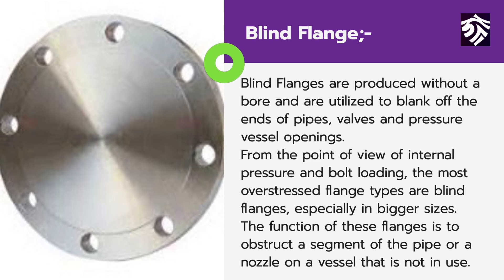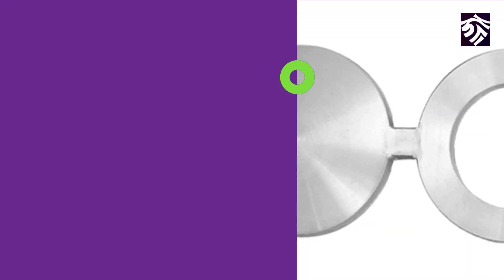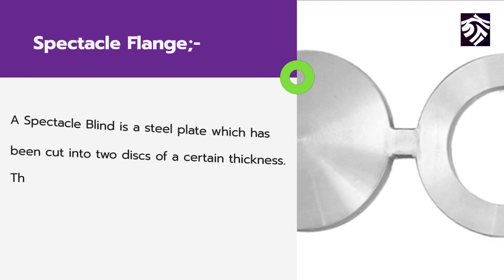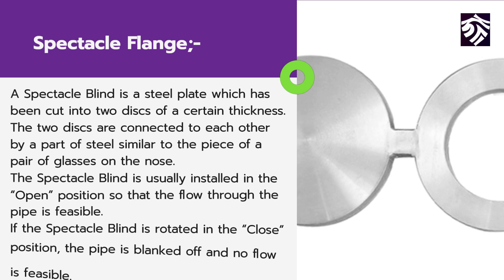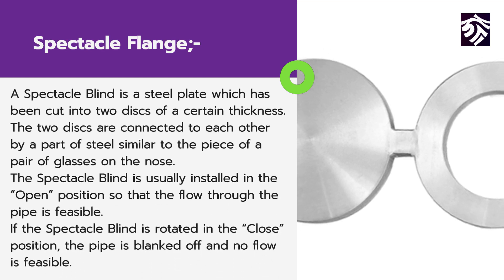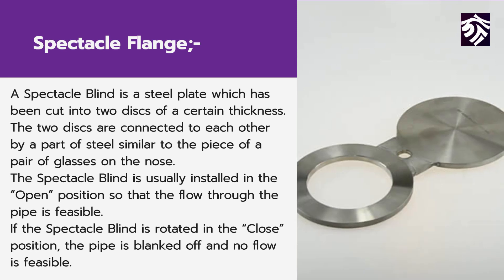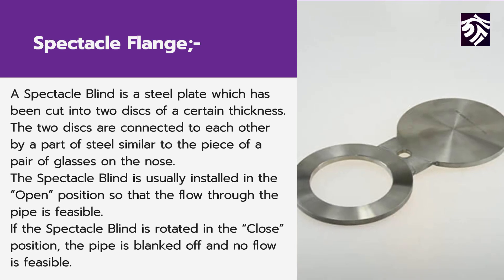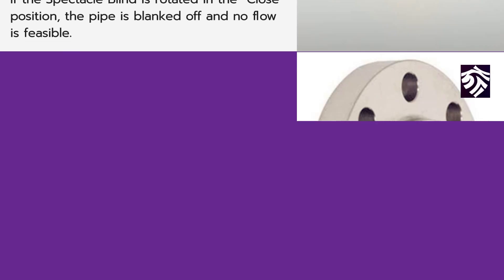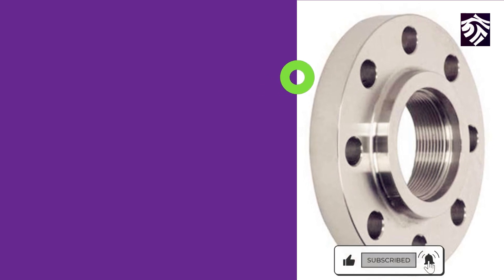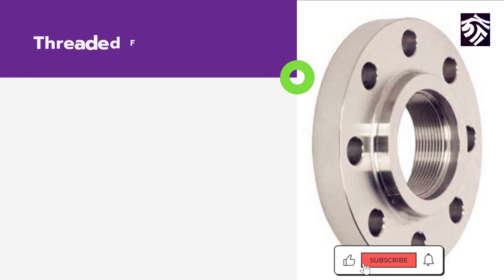Another very special type of flange is the spectacle flange. A spectacle blind is a steel plate which has been cut into two discs of a certain thickness. The two discs are connected to each other by a part of steel, similar to the piece of a pair of glasses on the nose. The spectacle blind is usually installed in the open position so that flow through the pipe is feasible. If the spectacle blind is rotated to the closed position, the pipe is blanked off and no flow is feasible.